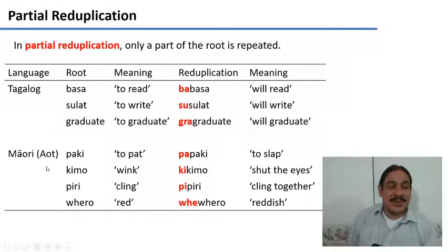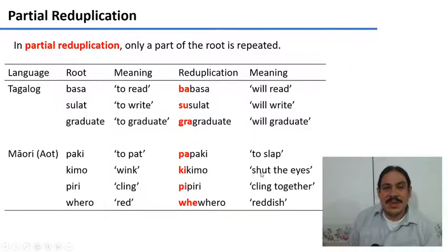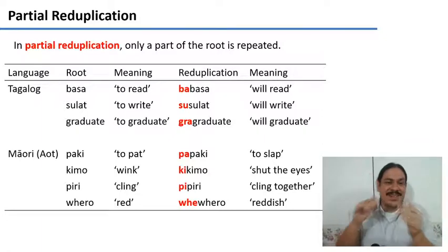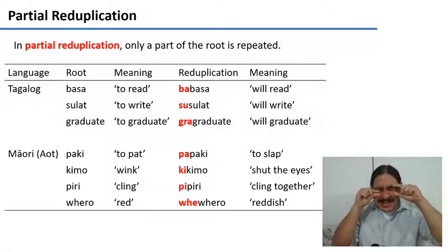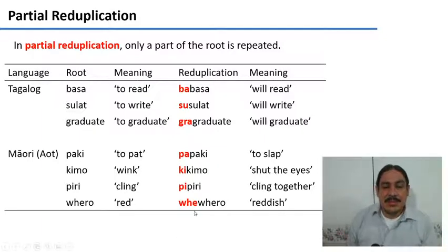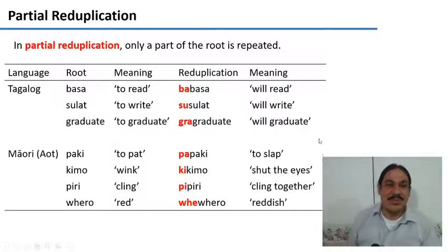In Māori of Aotearoa, New Zealand, we have roots like 'paki', 'kimo', 'piri', and 'whero'. In the reduplicated form, only the first syllable is repeated: 'papaki', 'kikimo', 'pipiri', 'whewhero'. The first three are like a more sudden version of the root — to pat, to slap, to wink, to shut your eyes, and to cling together. 'Whewhero' is an attenuation — a lesser quality of red, meaning reddish.